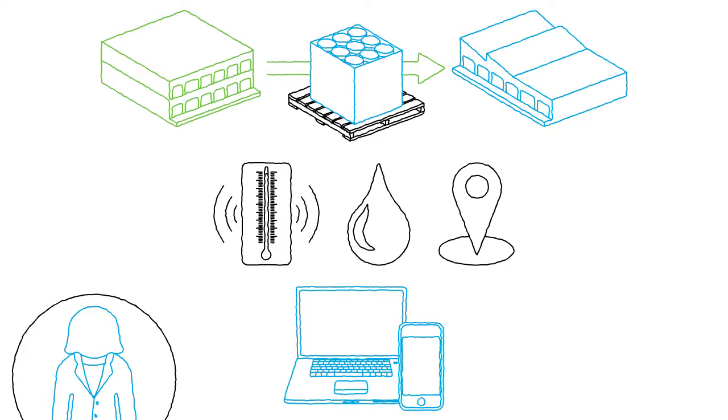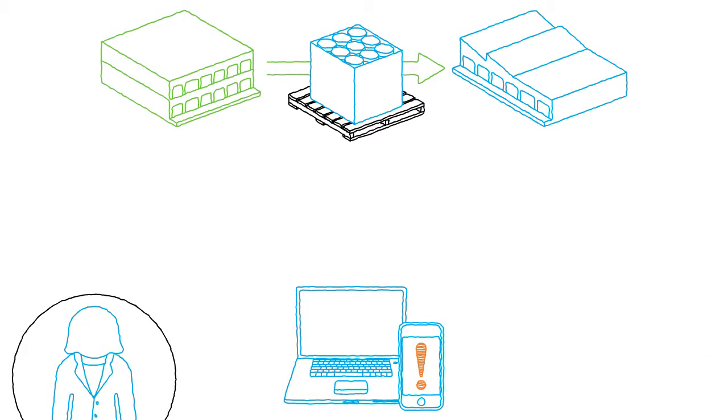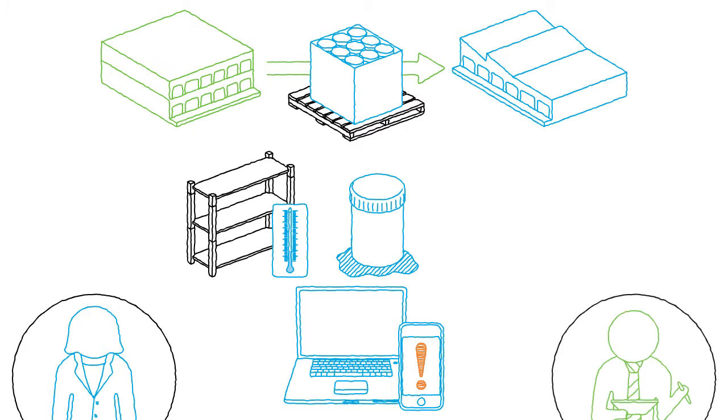At one point, the pallet alerts Melanie via text message that the distribution facility has a high ambient temperature. The alert states that the pallet must be moved to cold storage within 60 minutes or the medicine will spoil. The inventory manager at the distribution facility receives the same alert and moves the pallet to cold storage within five minutes, ensuring the medicine's safe storage.